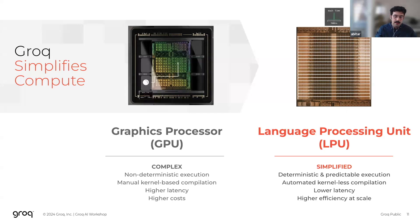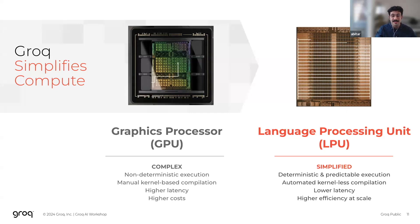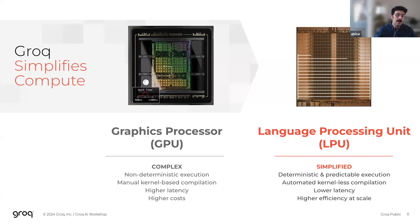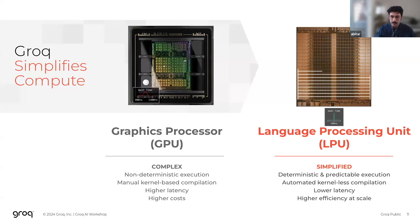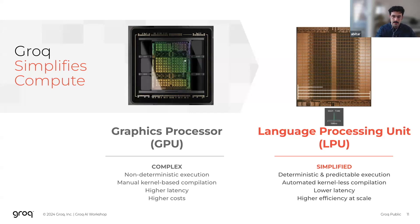And finally, this determinism also allows us to scale very efficiently to systems of hundreds to thousands of LPUs. Throughout this talk, I'll get into more detail as to how this works and why predictability matters. But I'd like to quickly contrast this against more traditional compute platforms like GPUs and CPUs, which are inherently non-deterministic in nature.